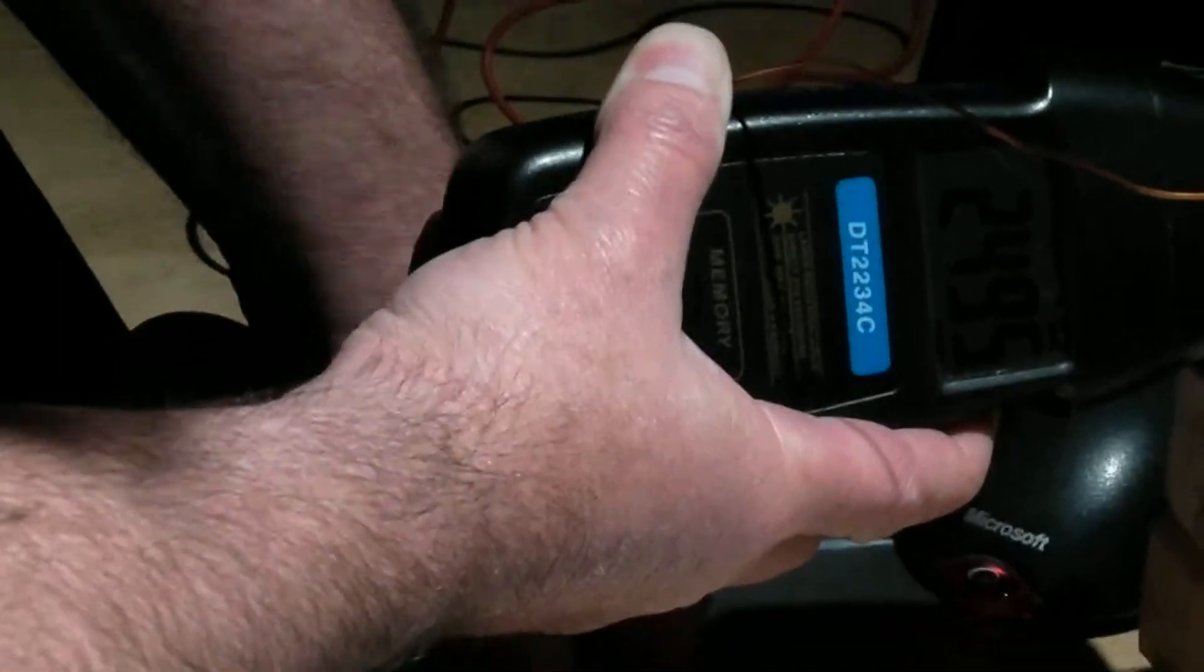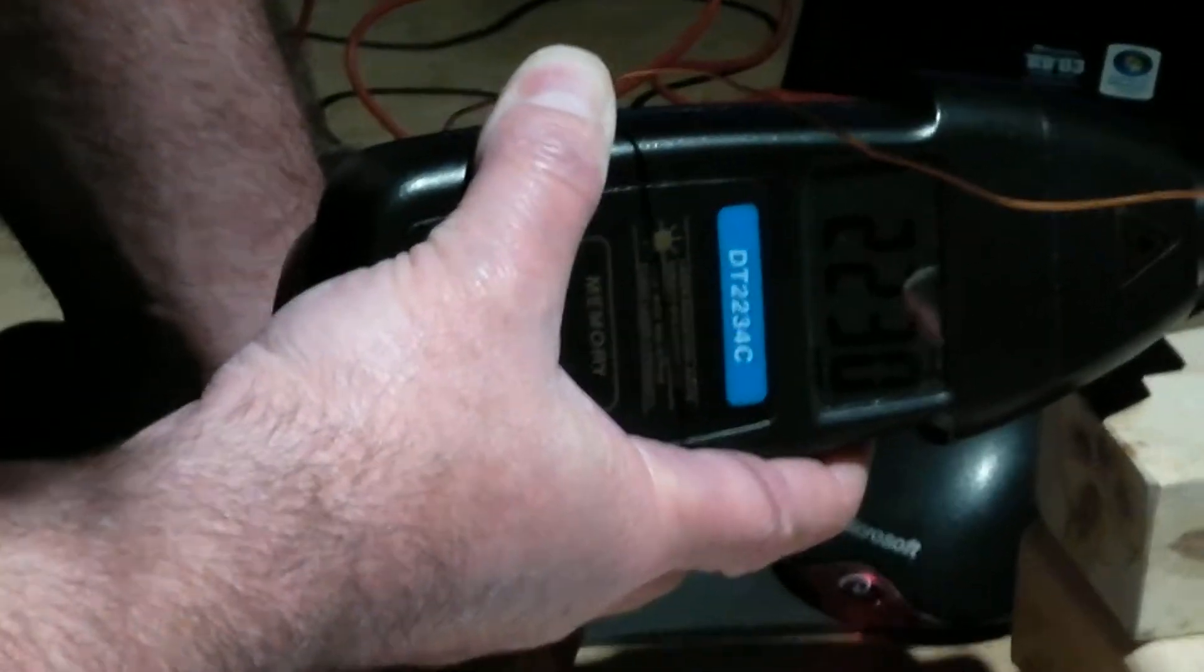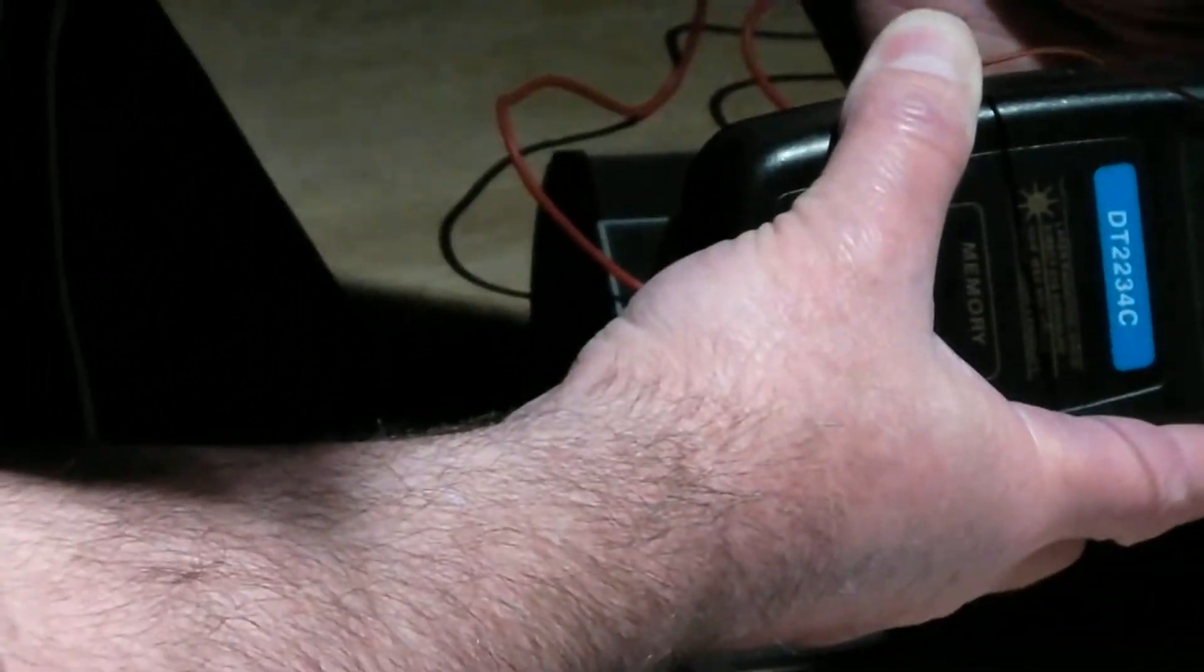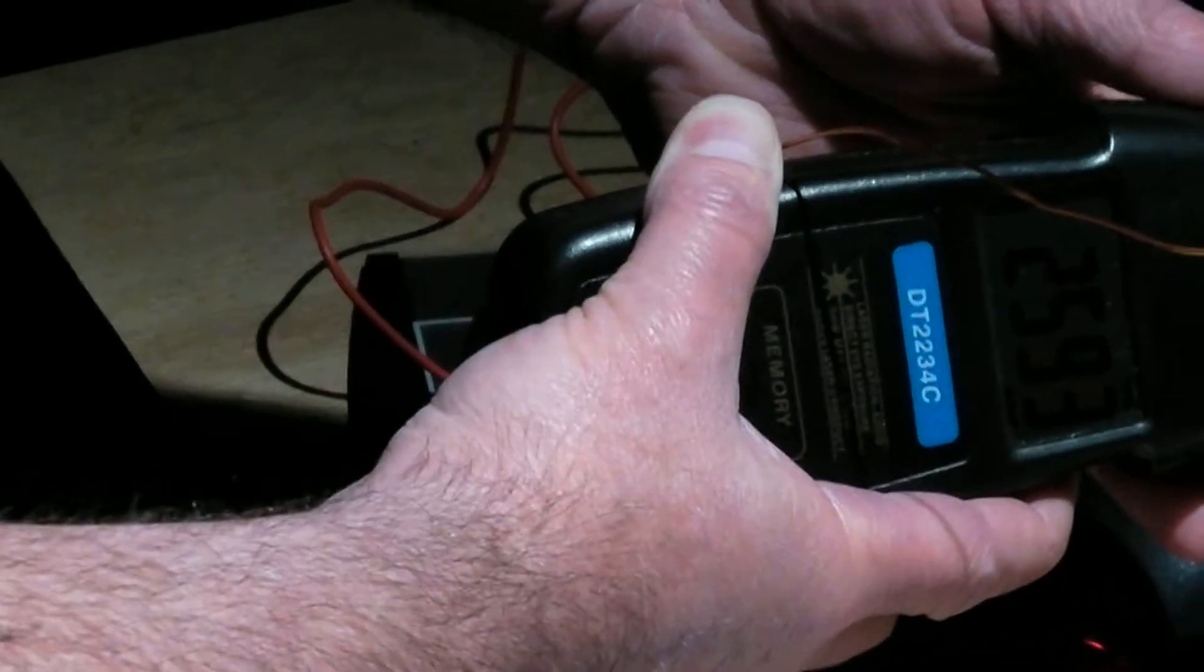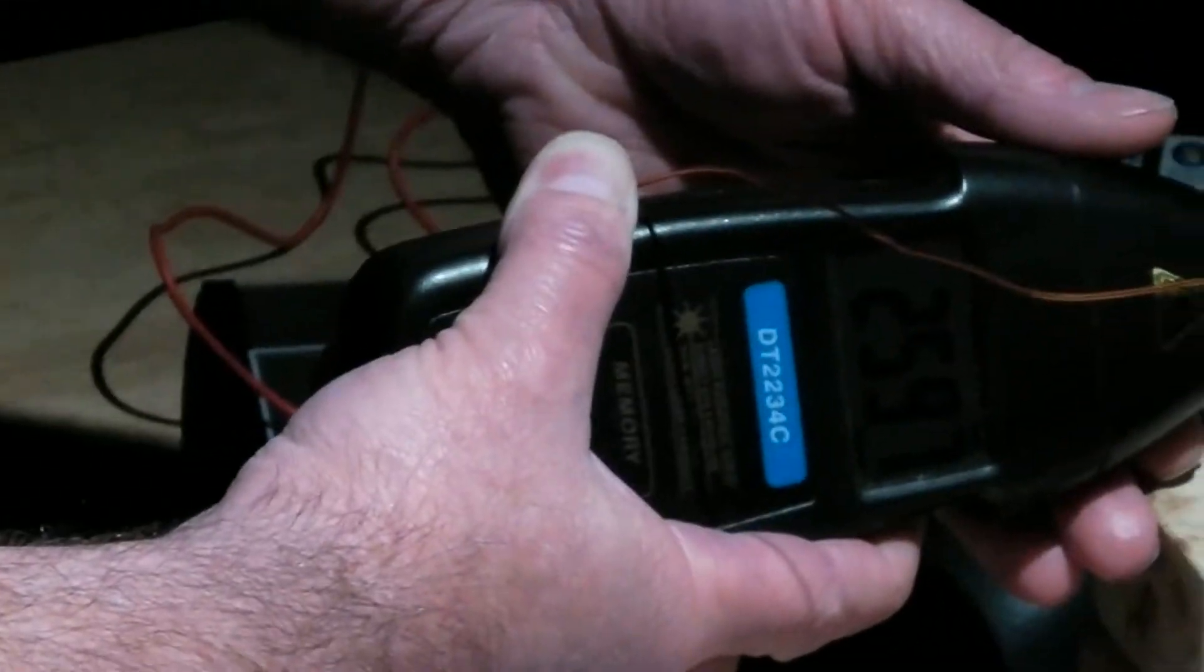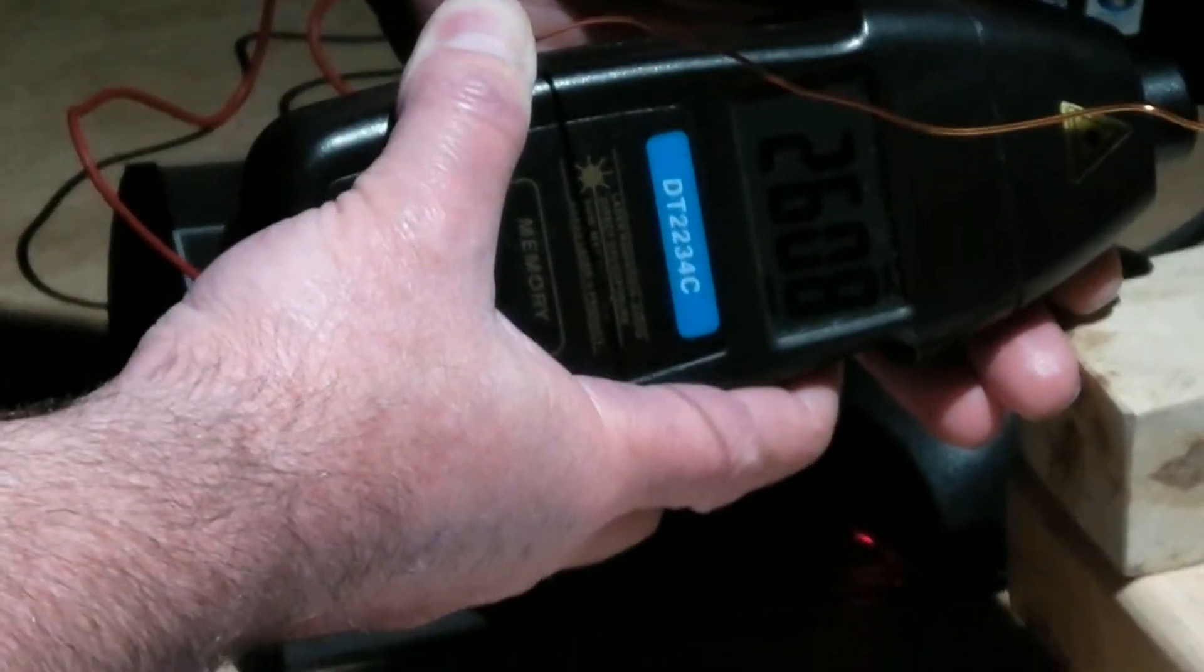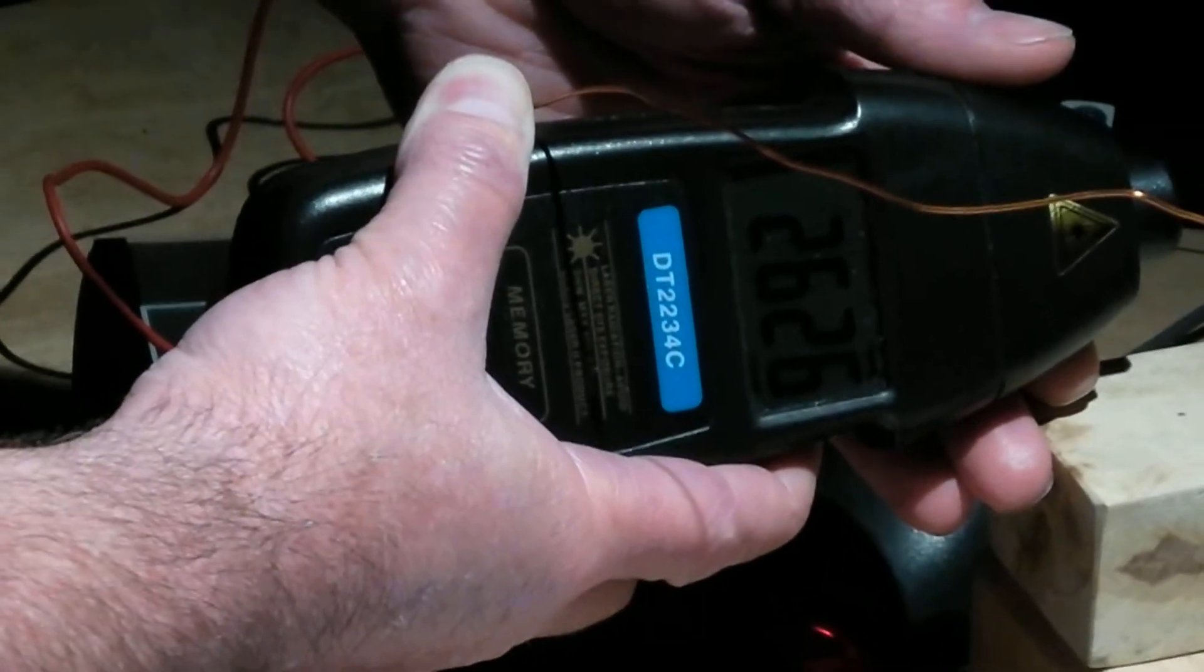As you can see here, it's climbing up to about 28. It takes a little bit to get there. The current draw is around 0.7 amps at 12 volts. It doesn't do much with steam.